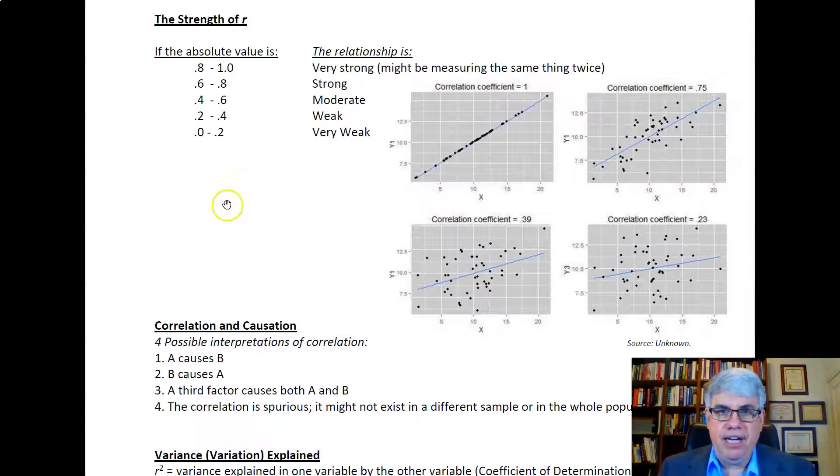What do these things look like if we were to graph them out? When the correlation is perfect, when it's one, all the dots are on the exact line that we're looking for. It's a very strong correlation.